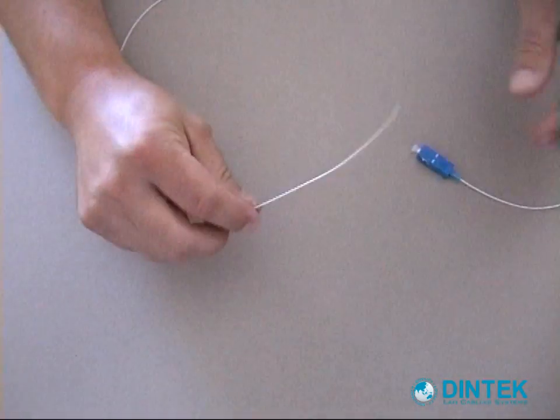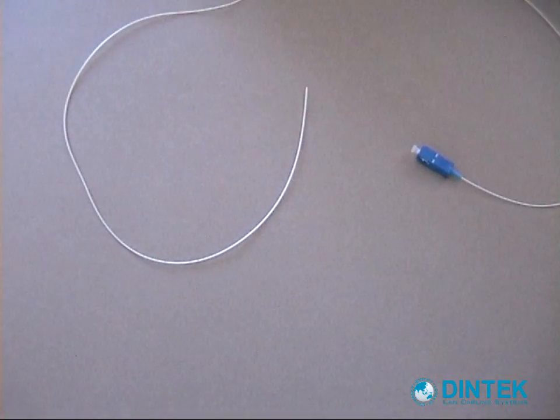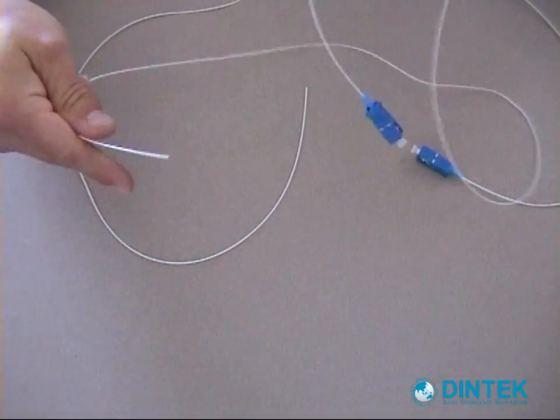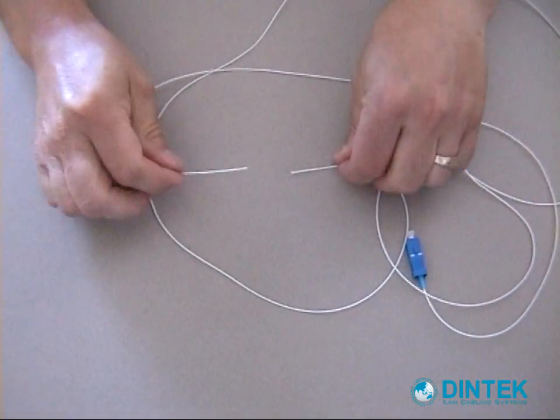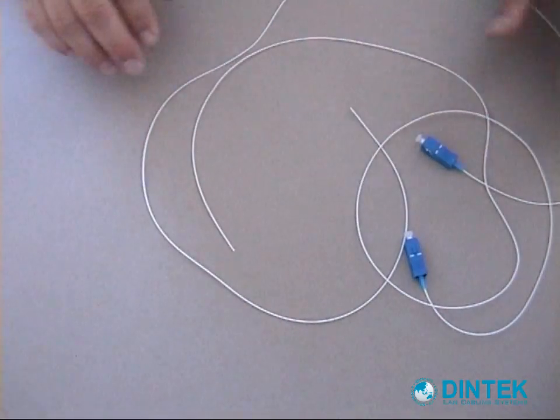Today we're going to do an easy fiber splice connection using some single mode fiber and connectors. We're going to use a couple of pigtails here, single mode fiber. We have two of these and we'll be joining the two ends together with a mechanical splice.